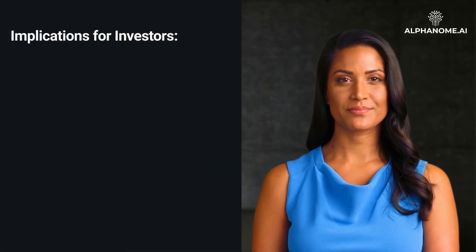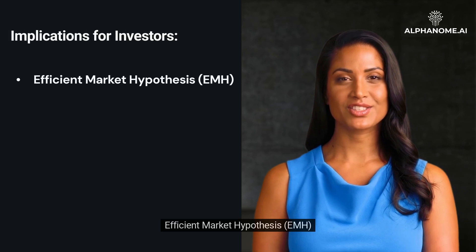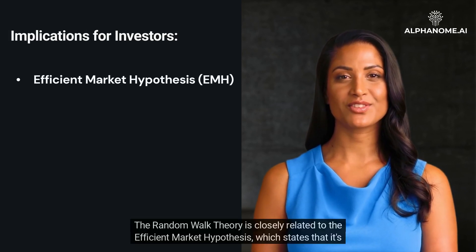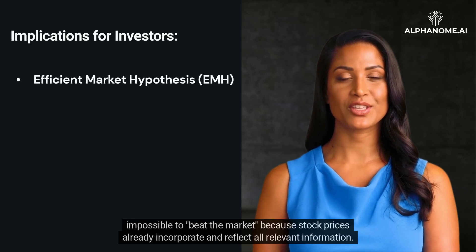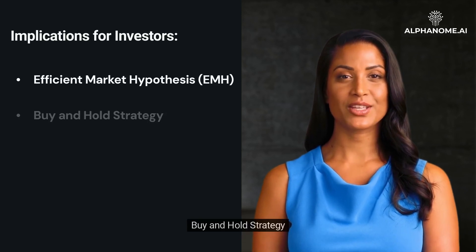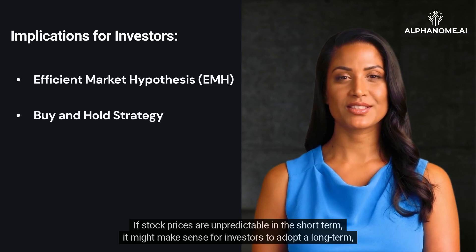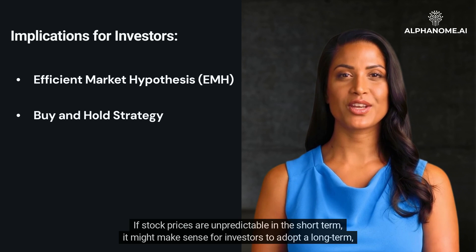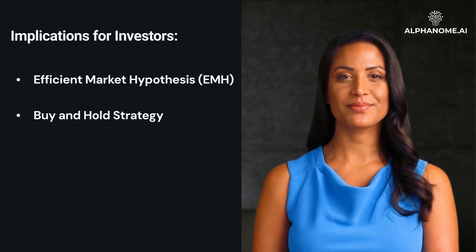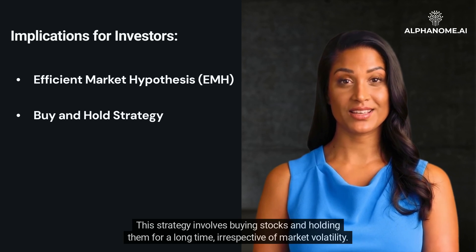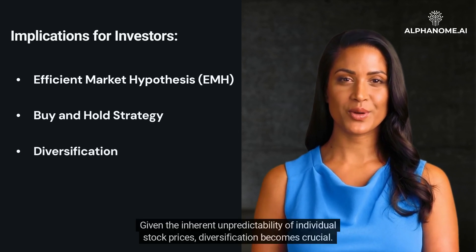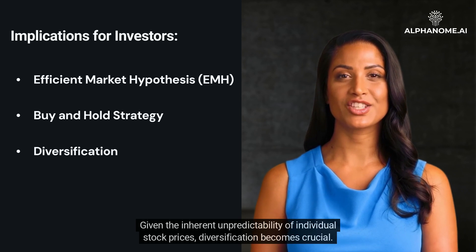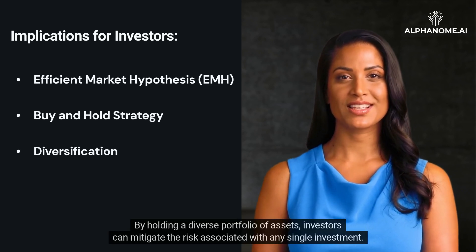Implications for Investors. The Random Walk Theory is closely related to the Efficient Market Hypothesis (EMH), which states that it's impossible to beat the market because stock prices already incorporate and reflect all relevant information. If stock prices are unpredictable in the short term, it might make sense for investors to adopt a long-term buy-and-hold strategy, holding stocks for a long time irrespective of market volatility. Given the inherent unpredictability of individual stock prices, diversification also becomes crucial — by holding a diverse portfolio of assets, investors can mitigate the risk associated with any single investment.